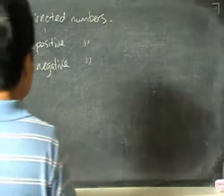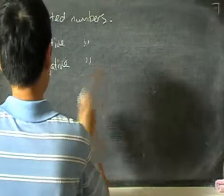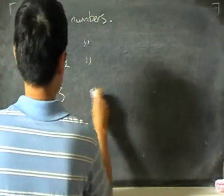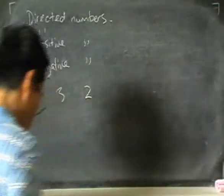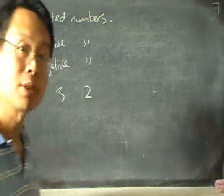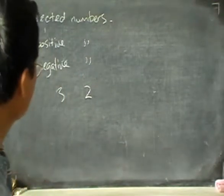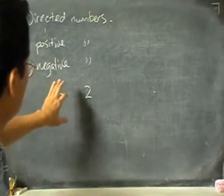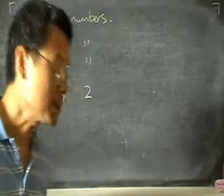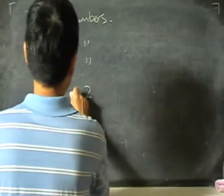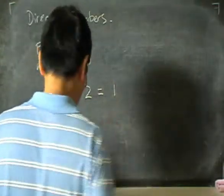Let me look at just two simple numbers like 3 and 2. These are simple numbers that we know. If I subtract these two numbers — if I take 3 minus 2 — I will get 1.